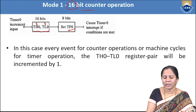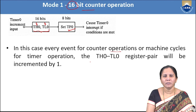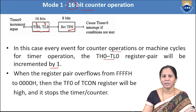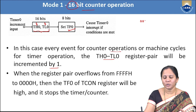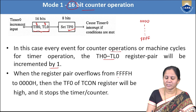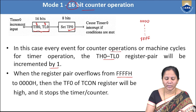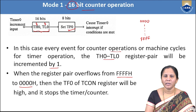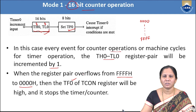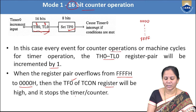In mode 1, when the value reaches FFFFH and is incremented by 1 again, overflow occurs. The TF0 bit in the TCON register is set, and the timer counter operation is stopped. The count goes from 0000H to FFFFH, and upon overflow the flag is set.